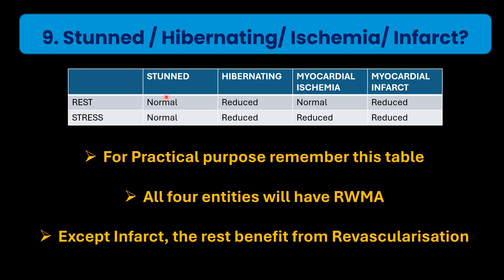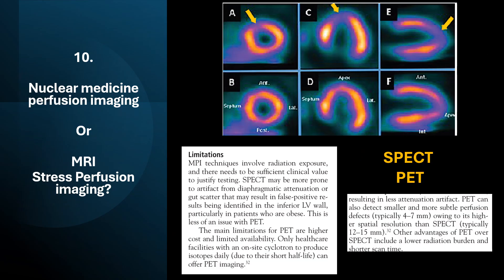The important reason to differentiate between these four entities is that revascularization benefit exists only for the first three. If there is clear-cut myocardial infarct with more than 50% transmural infarction or more than seven segments involved, revascularization may not benefit the patient.